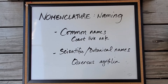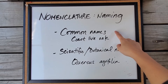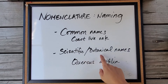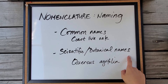This video covers nomenclature, or names, for plants. We have two types of names: the common names, which most arborists and most lay people will know, and then scientific or botanical names, which is a very specific system used in science.